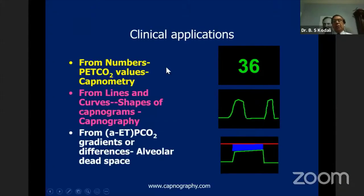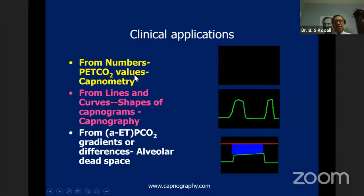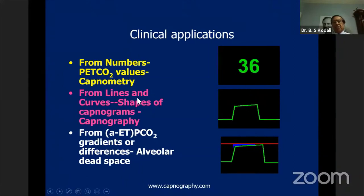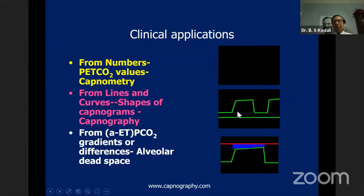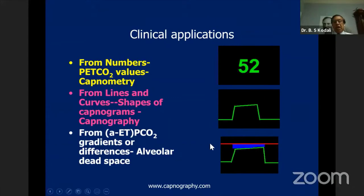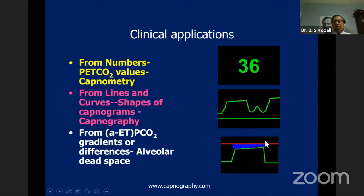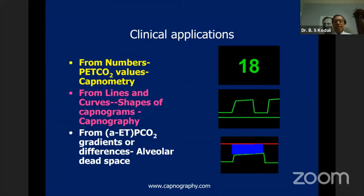When applying capnography clinically, look at the end-tidal CO2 values — whether low or high. Look at the shape, as the shape is specific in certain clinical circumstances. If you have an arterial line and know the PaCO2, the difference between that and end-tidal CO2 gives you an idea about alveolar dead space.